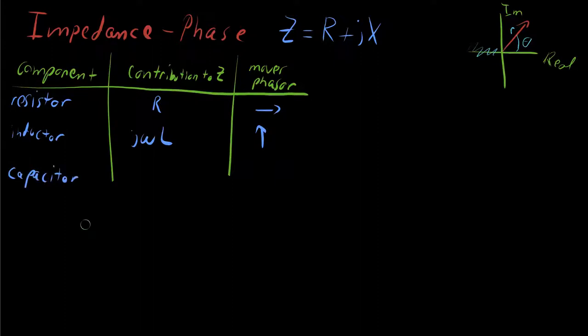Now let's take a look at our capacitor. Our capacitor, its contribution to Z is also purely reactive. It's written down as one over j omega C. Which direction does this move the phasor? It's not exactly obvious, is it? What on earth is a one over j?